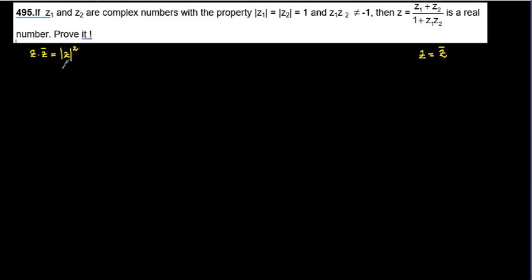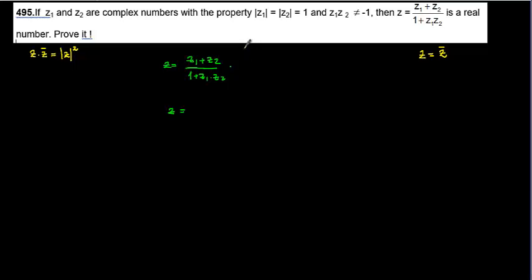I'm going to start with the expression: z equals z1 plus z2, all over 1 plus z1 times z2. I'm going to multiply and divide by the same number — specifically, I'll multiply numerator and denominator by 1 over z1 times z2.